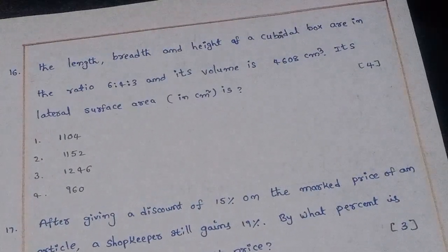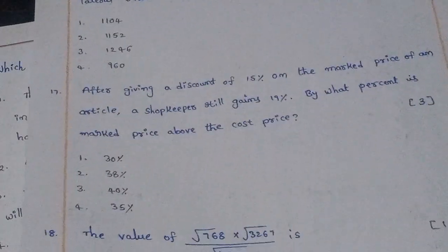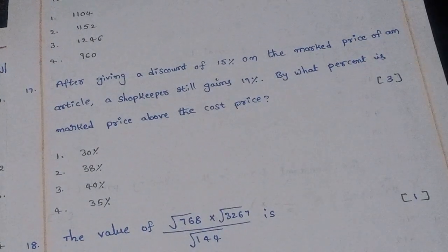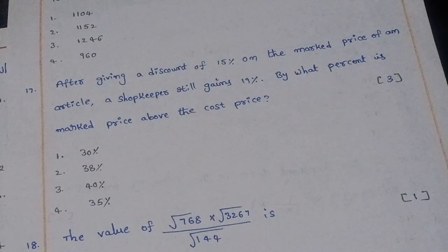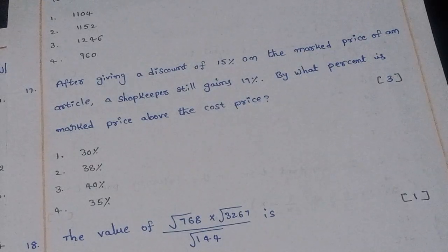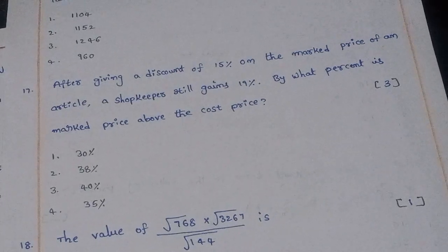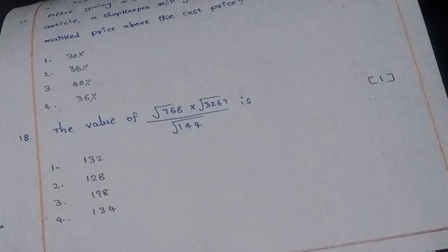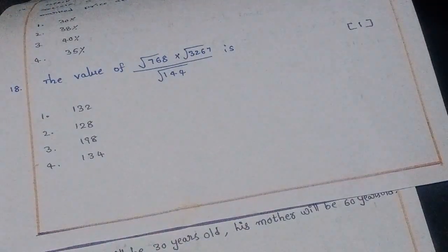Seventeenth question: After giving a discount of 15% on the marked price of an article, a shopkeeper still gains 19%. By what percentage is the marked price above the cost price? The right answer is option 3: 40%.